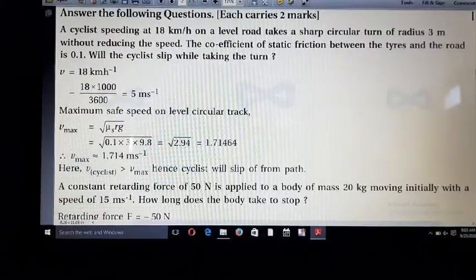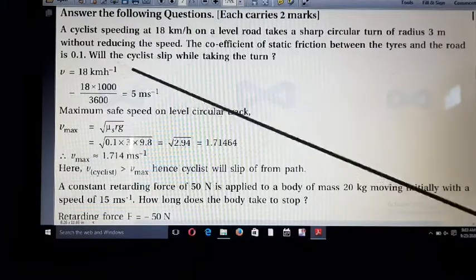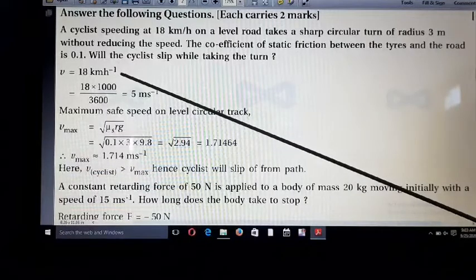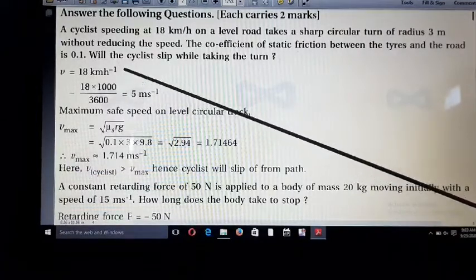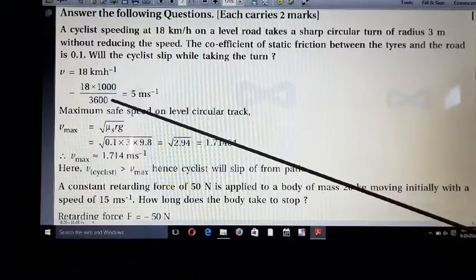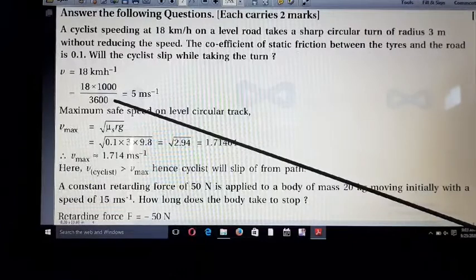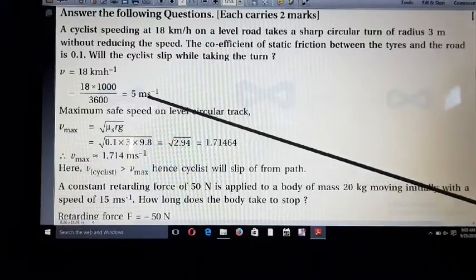Friends, first of all, we want to find out the speed of the cyclist. Speed v is equal to 18 km per hour. First of all, we convert into meter per second, so multiply 18, multiply 1000 and divide by 3600. Speed of the cyclist is 5 meter per second.